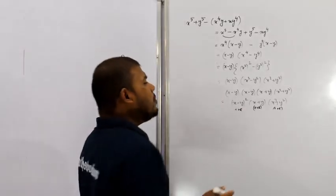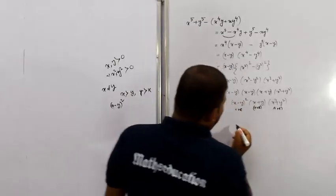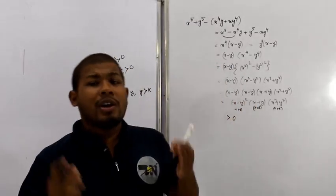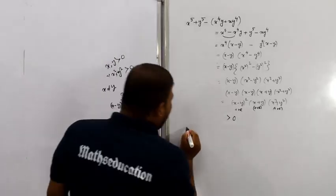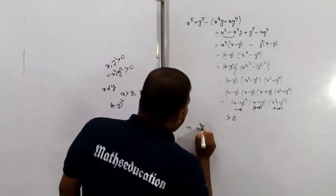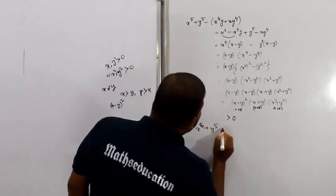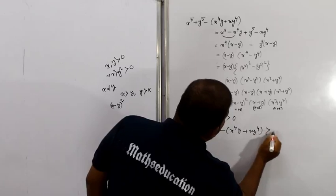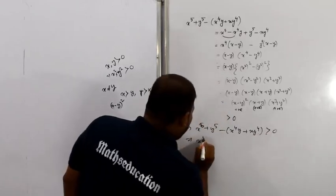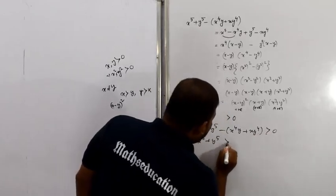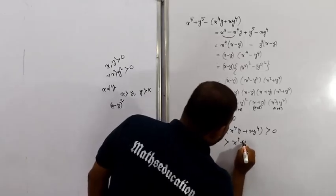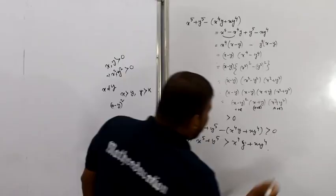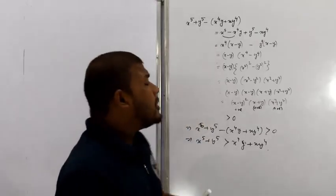So we can conclude that x to the power 5 plus y to the power 5 is greater than x to the power 4 y plus x y to the power 4, and the inequality is proved.